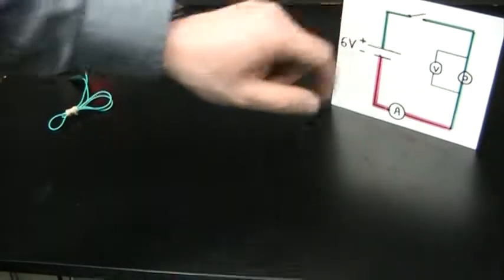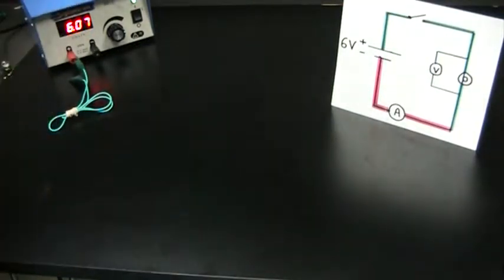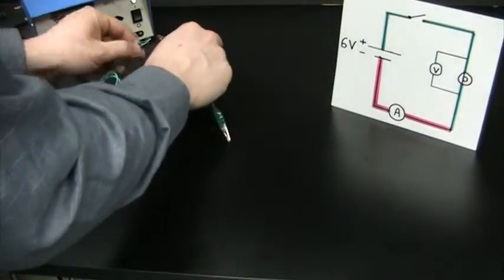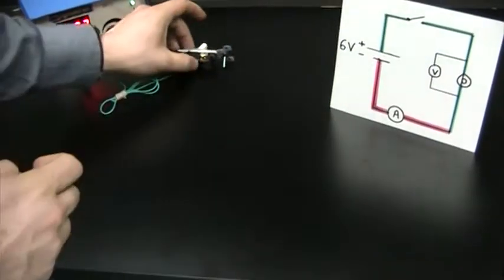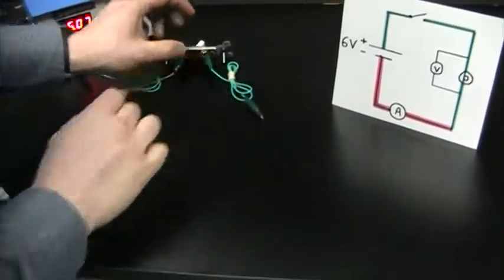Going from the battery to the switch, which is our next component, we're going to use our green wires to come out to the battery and out the other side.